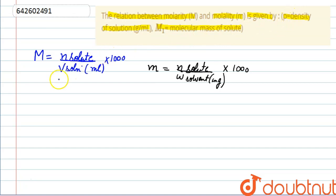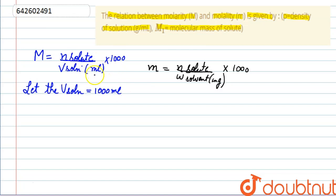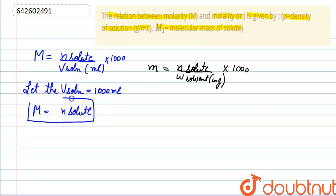Now, we will suppose the volume of solution to be 1000 mL. If the volume of solution is 1000 mL, then molarity will be equal to the number of moles of solute. Let this be equation number one.